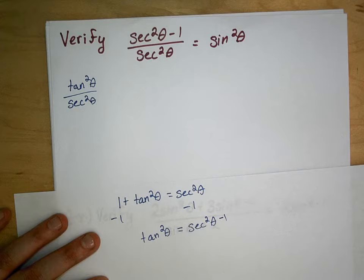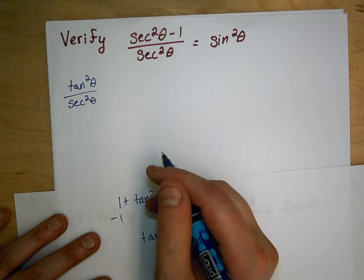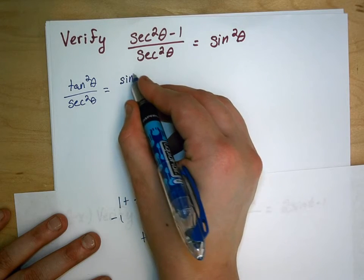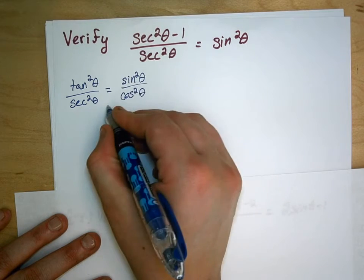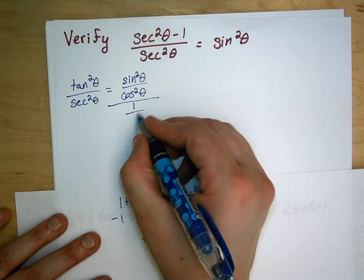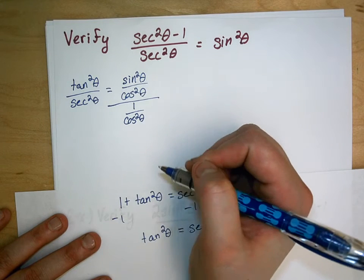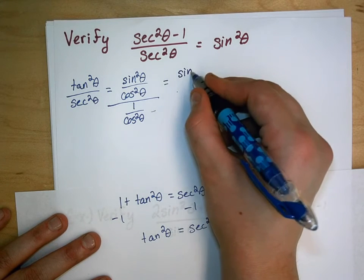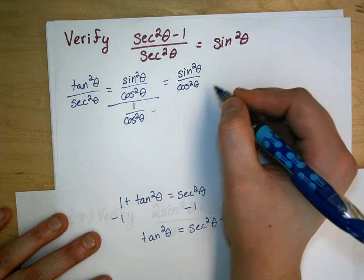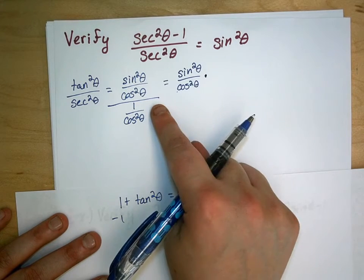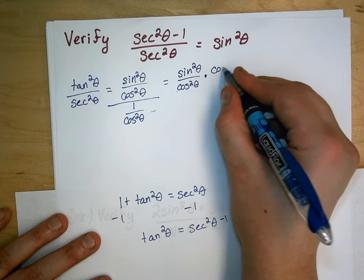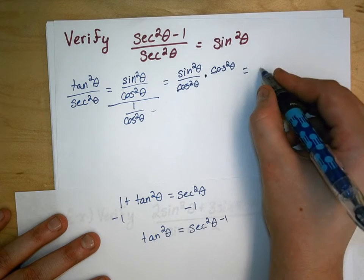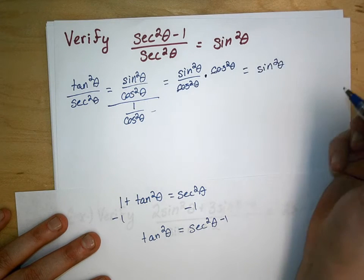Now I'm kind of stuck, so I'm going to change them into sines and cosines. Tan squared is sine squared theta over cosine squared theta, divided by secant squared, which is 1 over cosine squared. I can flip that divisor upside down and multiply, so I get sine squared theta over cosine squared theta times cosine squared theta. The cosine squared terms cancel out, and I get sine squared theta — which is what I wanted.